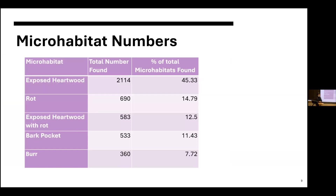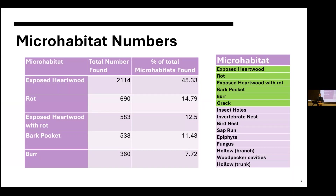For objective two, we quantified the microhabitats found. The top five were exposed heartwood, rot, exposed heartwood with rot, bark pockets, and burrs. Altogether, these five microhabitats made up about 95.5% of total observed microhabitats. Looking at the full list, the top six — including bark cracks — can all be explained by both natural and artificial damage, such as pruning. The non-highlighted ones — insect holes, invertebrate nests, birds' nests, sap run, epiphytes, fungus, hollows, and woodpecker cavities — wouldn't typically be associated with artificial damage. This justifies that the most common microhabitat types are those associated with artificial damage.